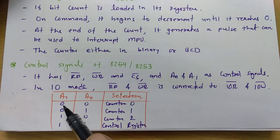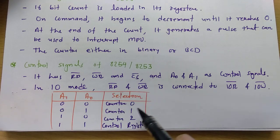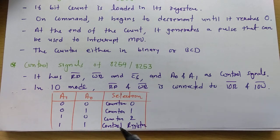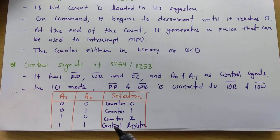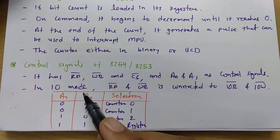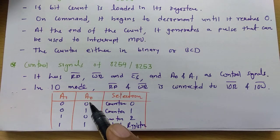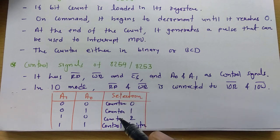With A0 and A1: 00 selects Counter 0, 01 selects Counter 1, 10 selects Counter 2, and 11 selects the Control Register. By selecting the Control Register, we can set the mode of operation and counter type for the 8254.